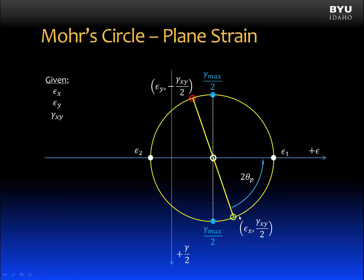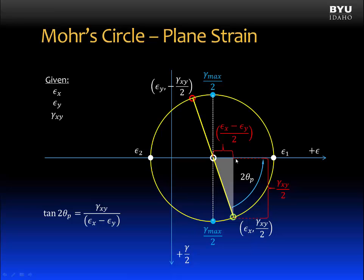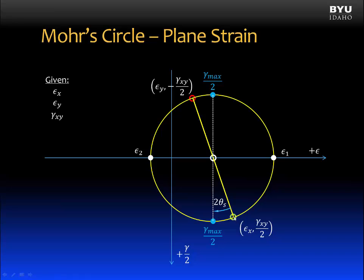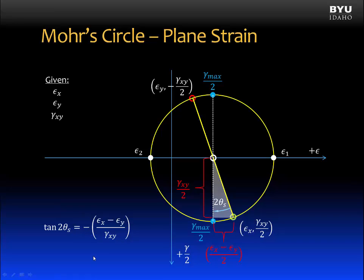The rotation angles can also be found using Mohr's circle. Here is the x-face shown with the green dot. If we were to rotate the element to reach our first principal strain, we would rotate it in the counterclockwise direction through angle two theta p. Remember, the two is there because angles on Mohr's circle are double that of reality — the x-face and y-face plot 180 degrees apart on Mohr's circle, while in reality x and y directions are only 90 degrees apart. We find two theta p using the same right triangle: tangent of two theta p equals the opposite side divided by the adjacent side. To rotate from the x-face to maximum in-plane shear strain, we go through angle two theta s, where tangent of two theta s equals the opposite side divided by the adjacent side. The negative sign shows we are rotating in the opposite direction from that used to find the principal strains.